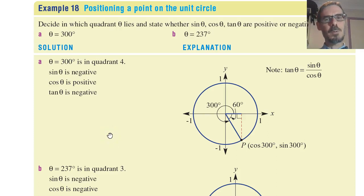Let me give you some examples in the third and fourth quadrants. Decide in which quadrant theta lies and state whether sine, cosine, and tangent are positive or negative.